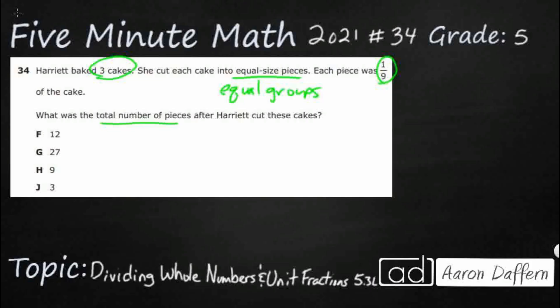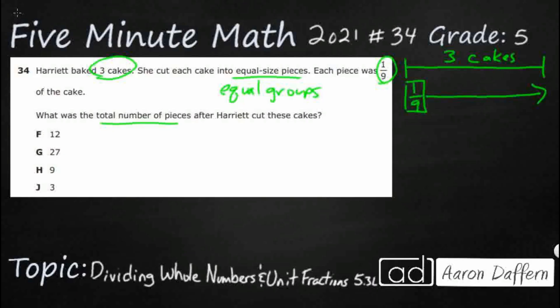Let's see if I can draw a strip diagram to figure out what we are going to do here. What's my total? I've got three cakes. I'm going to cut them into pieces, but I don't know how many pieces I need. I do know each piece is going to be one-ninth, but I don't know how many one-ninths I can get out of three full cakes. So that lets me know it is going to be a division problem.